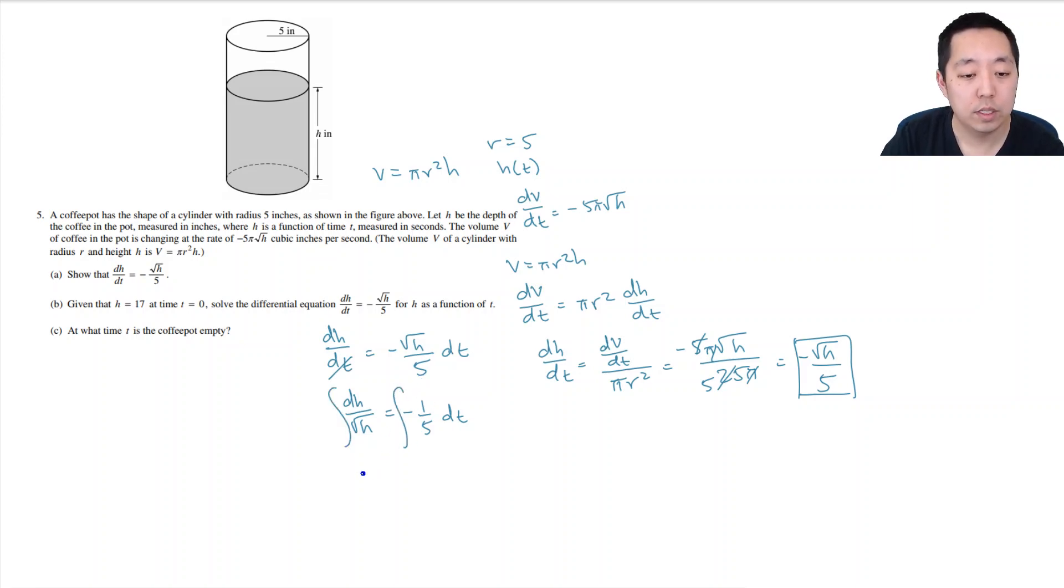Then we're going to integrate. This is h to the negative 1/2. So to do power rule, it's h to the positive 1/2 divided by 1/2 is equal to -1/5 t plus c. So I can multiply through by 2, so that means √h is equal to -2/5 t plus 2 times a constant, which is just some other constant.